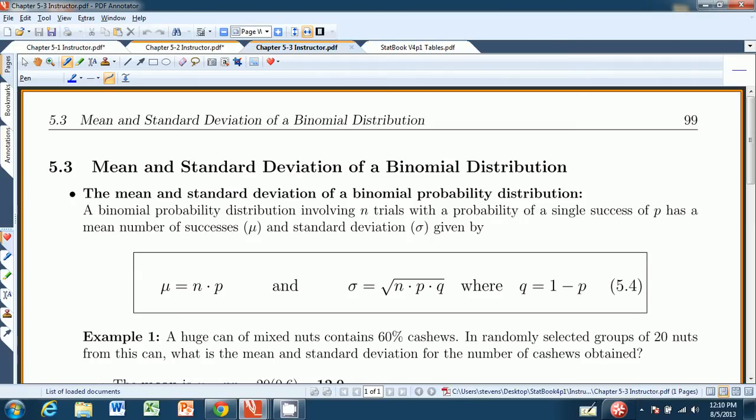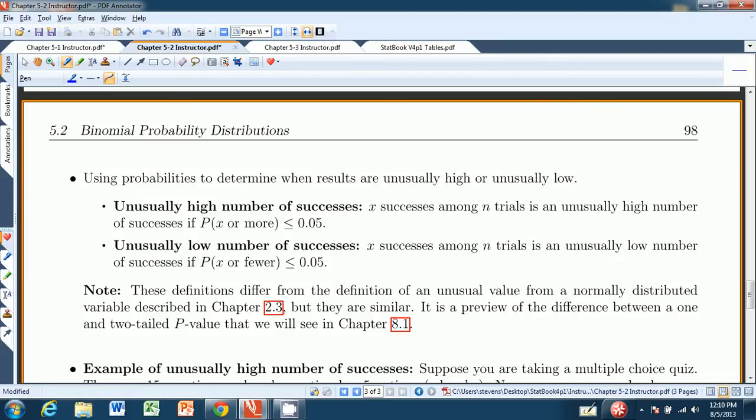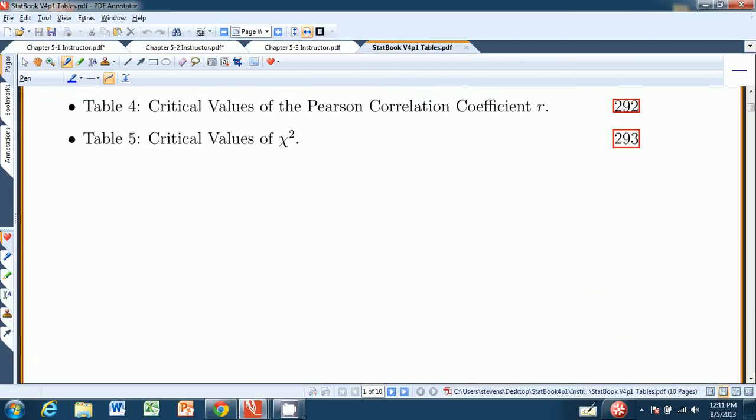One of the nice things about this is we can start using continuous probability distributions to estimate binomial probability distributions. And specifically, going back to 5.2, we were talking about an unusually high number of successes and unusually low number of successes. There's a pretty subtle difference because something was unusually high if the probability of x or more was less than 0.05, and something was considered an unusually low number of successes if the probability of x or fewer was less than 0.05. That's a little tricky.